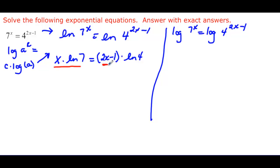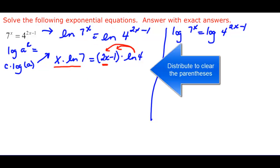I've got an x over here, but I also have an x in here. So that means that I need to distribute my ln 4 to both of those things. So I can get that x term out of the parentheses. So over here I have x times ln 7. And that's going to be equal to, and then when I distribute, I will have 2x times ln 4. And then I will have minus 1, or just minus if you prefer, ln 4.